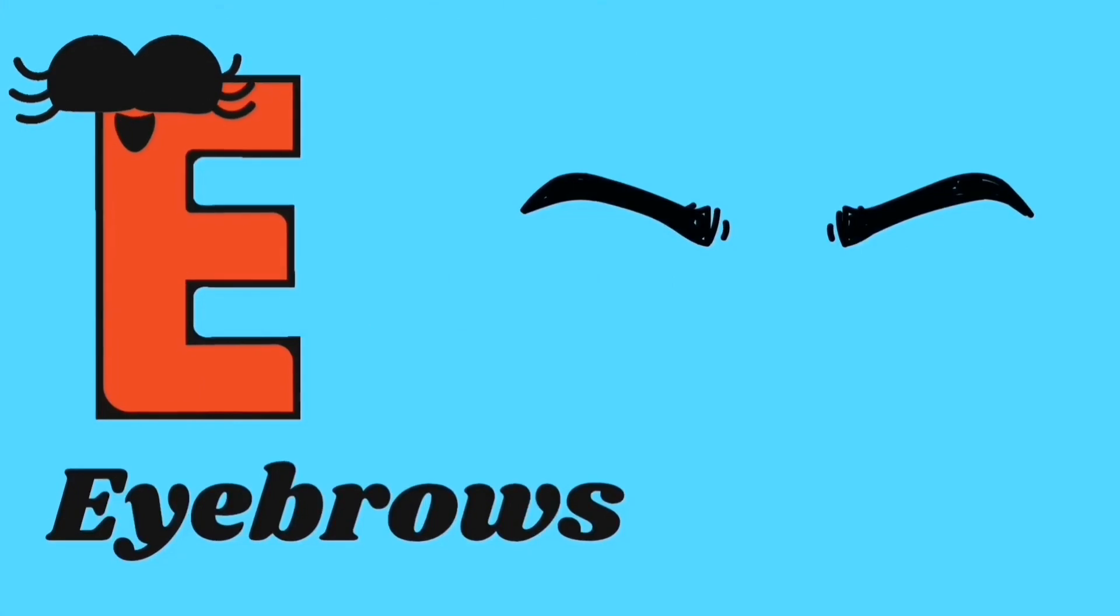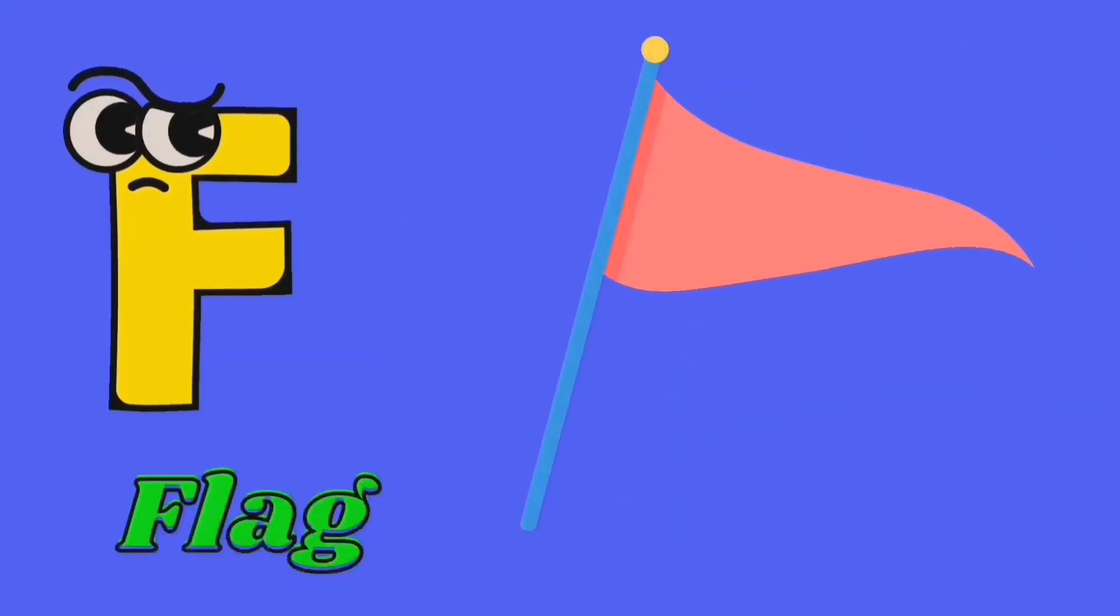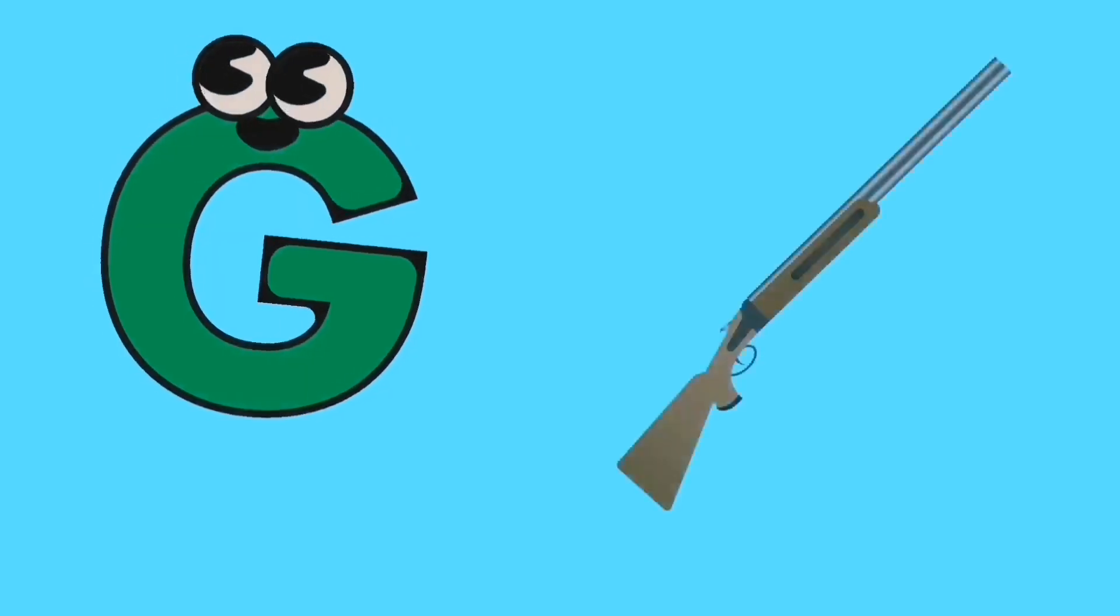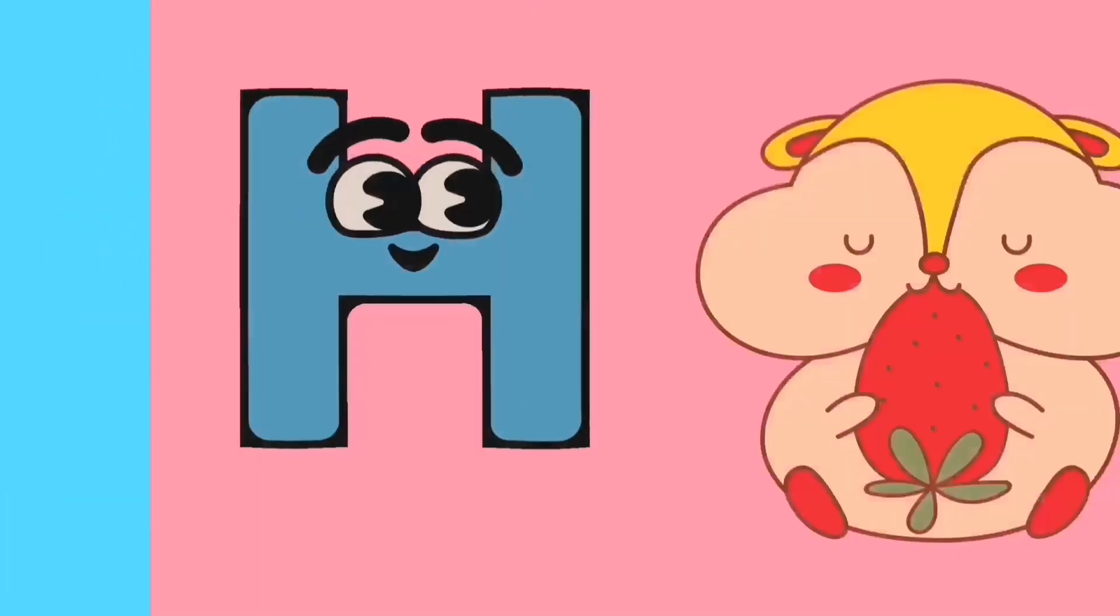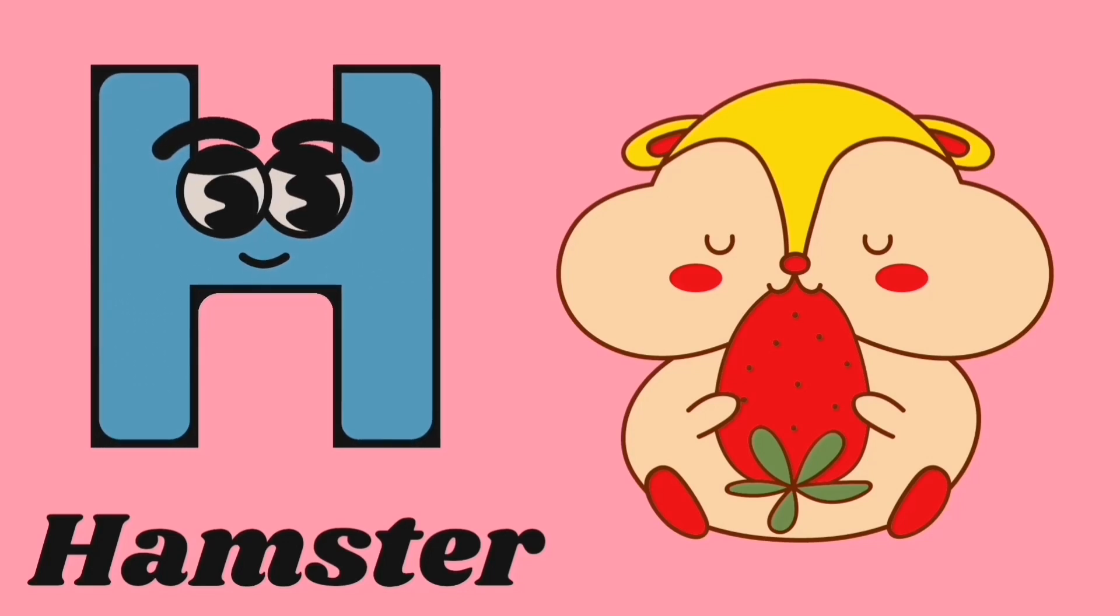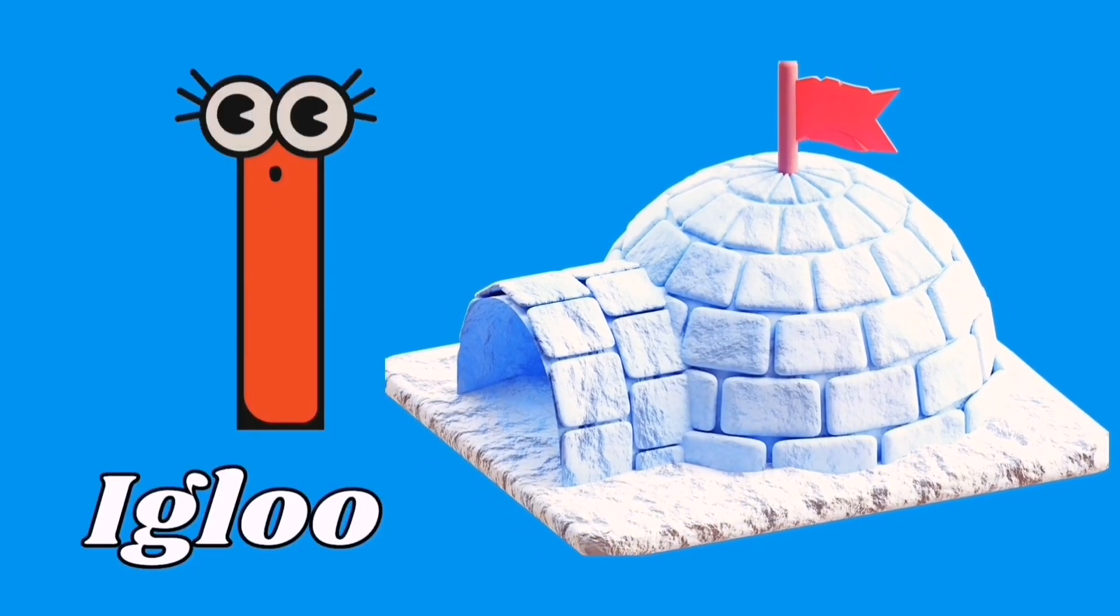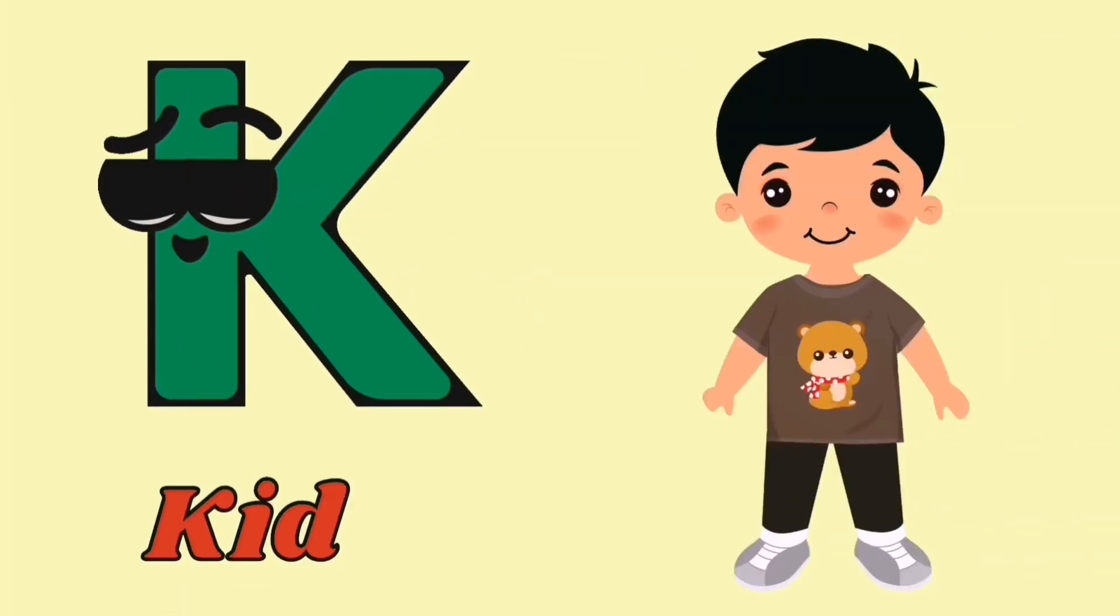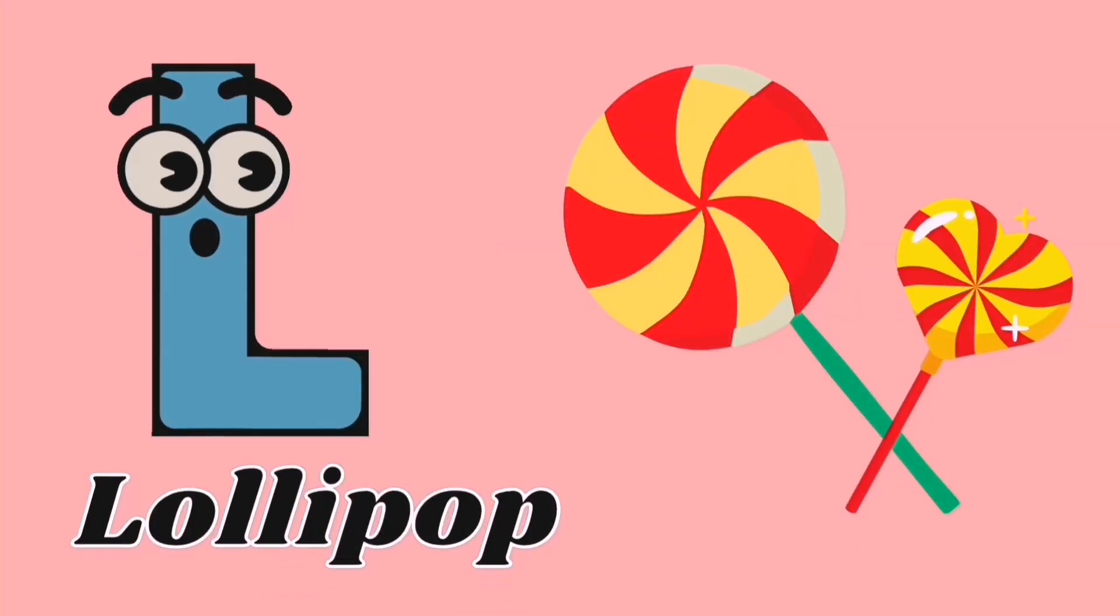E for eyebrows, F for flag, G for gun, H for hamster, I for igloo, J for jug, K for kid, L for lollipop.